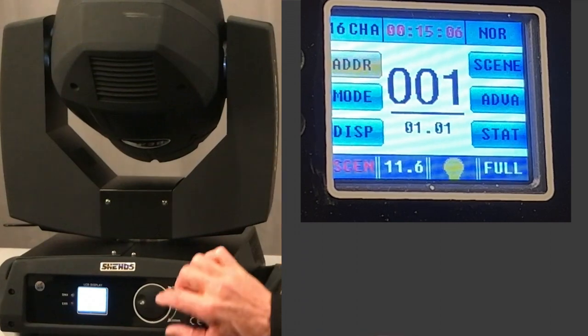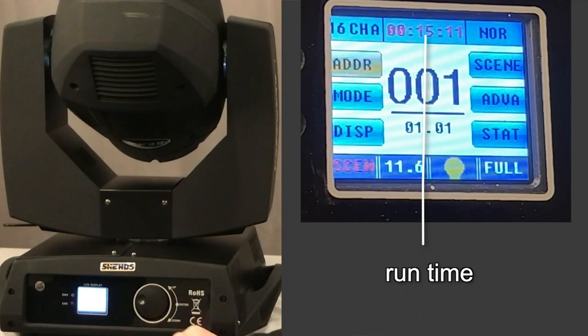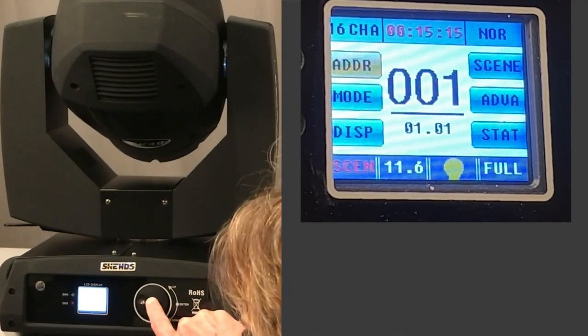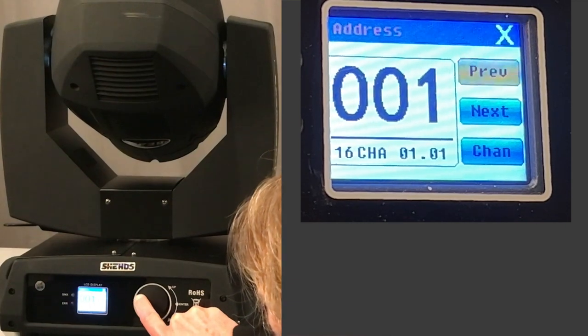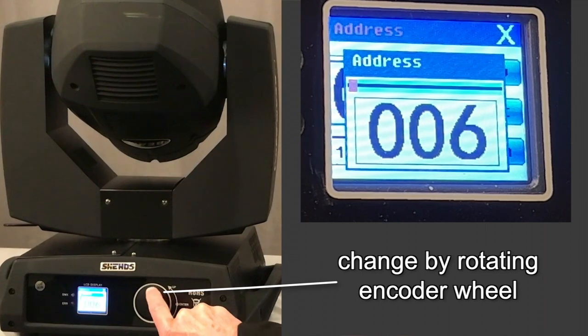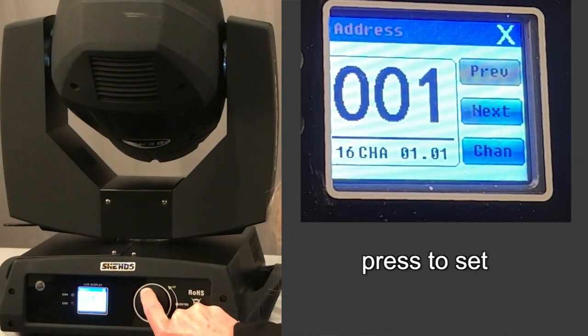On the startup page, you can see that it's in 16 channel mode. This shows the run time and also the DMX starting address that you can see is at 1. But you can go in and adjust that parameter by pushing the encoder and just spinning it until you hit the number that you want. Press it again to set it.